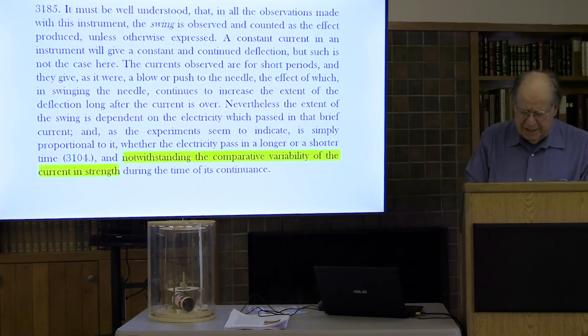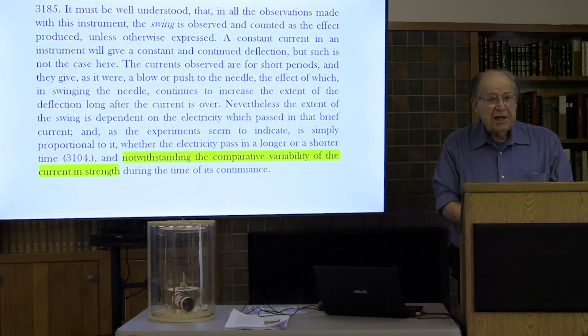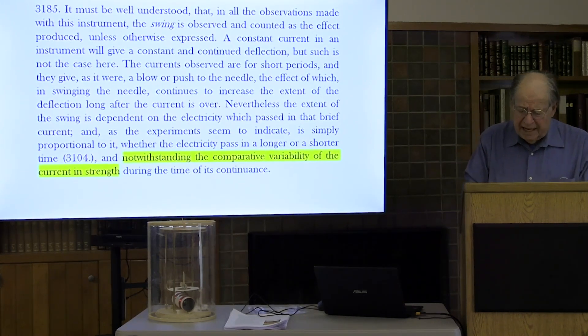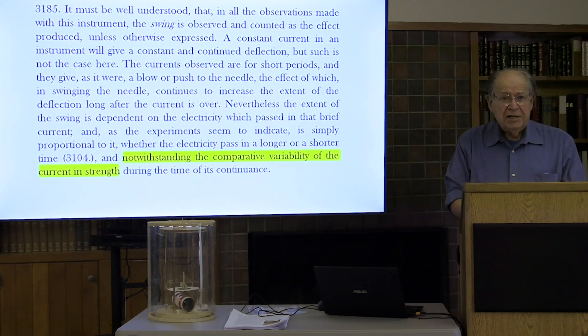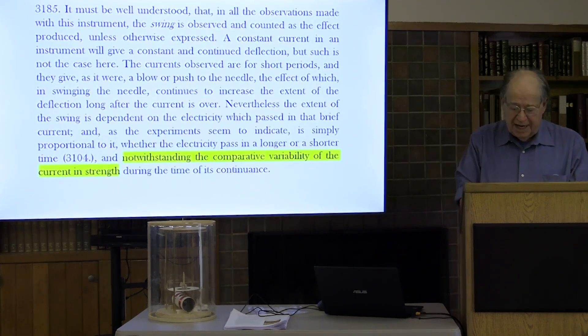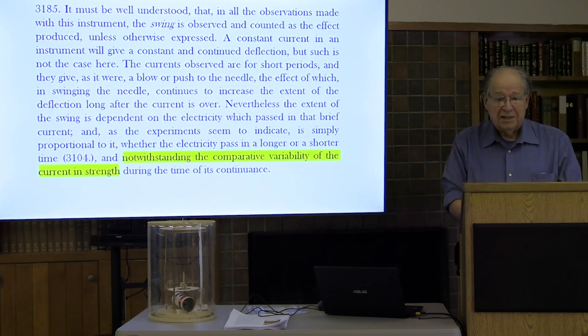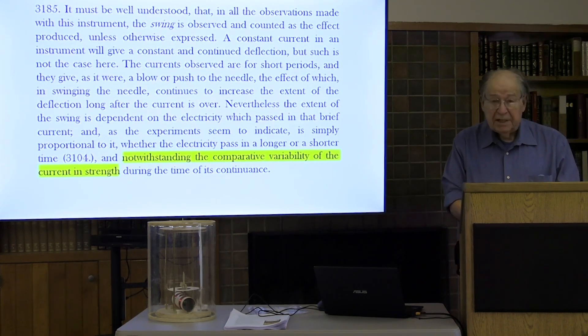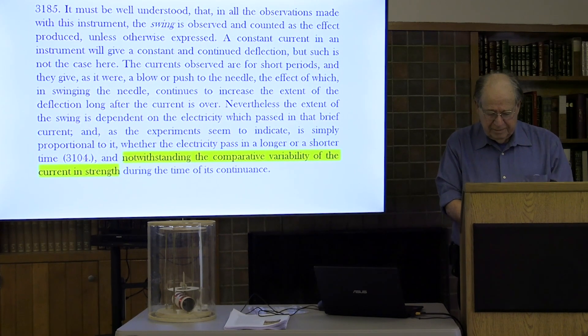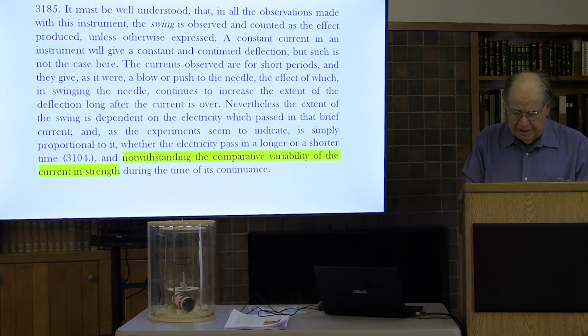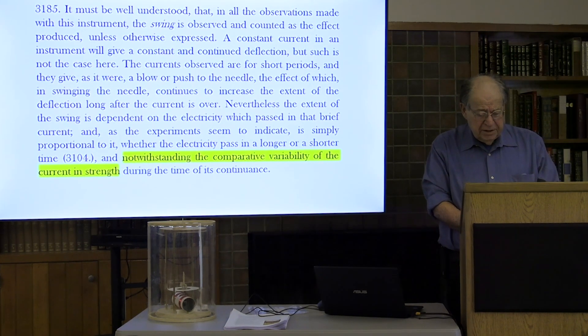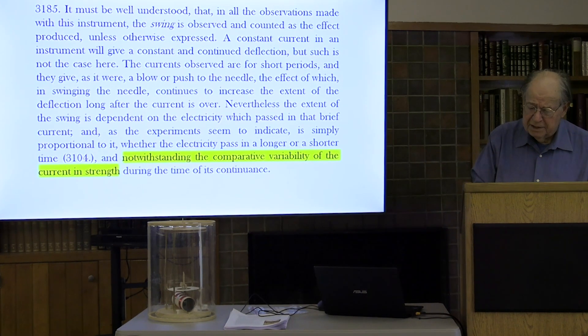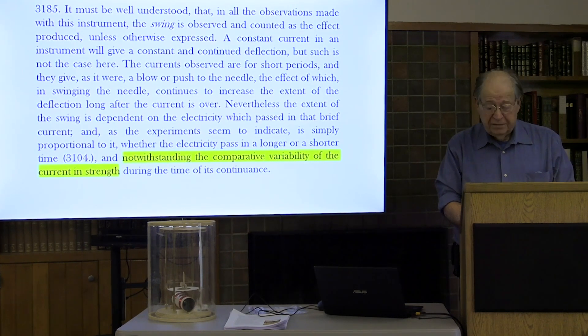Notice, in particular, the final sentence of this passage, where Faraday cites experiments which show that the galvanometer's initial swing retains its significance, notwithstanding the comparative variability of the current. Faraday thus encountered the same integrating quality in his galvanometer as we found in Huygens' pendulum, and therefore, I think we might well call it the integrating galvanometer. Let us review some of Faraday's experiments. We will then understand why the integrative property of his galvanometer turned out to be so important to Faraday's thinking.